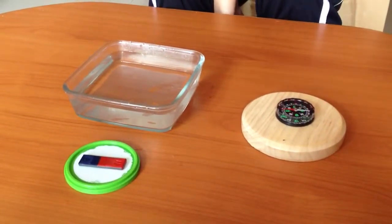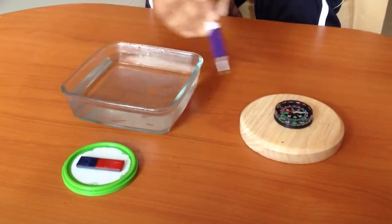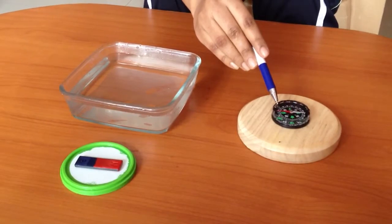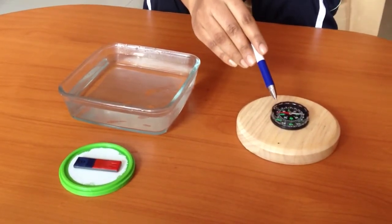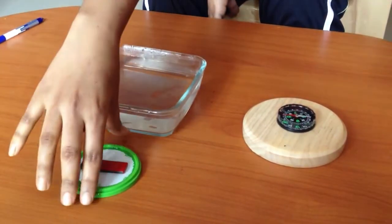For this activity, we need a bar magnet with a north pole and a south pole marked on it, magnetic compass which points in the north side direction, float and a vessel with water. We will float this magnet in water,